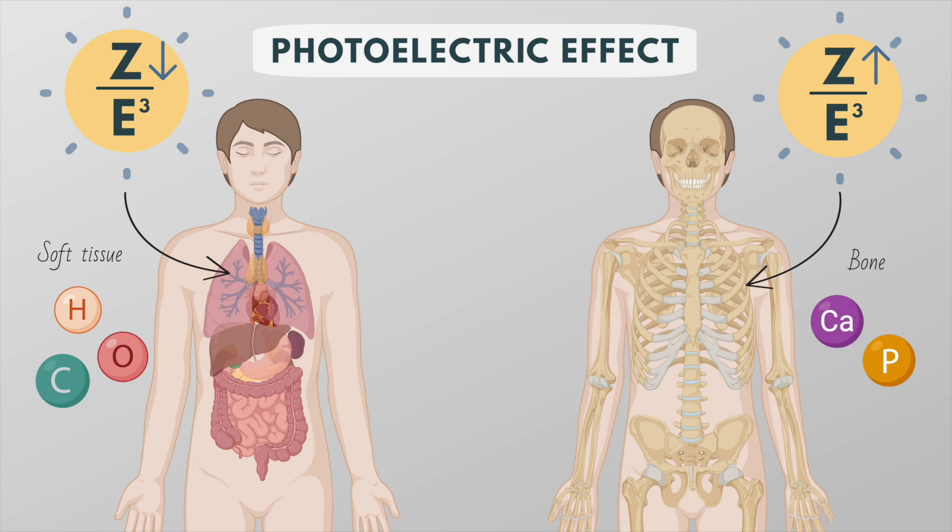Therefore, photoelectric absorption is more likely to occur in bone than in tissue. This effect is important in providing contrast.